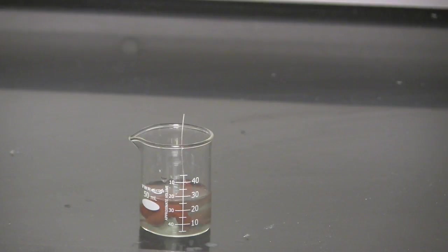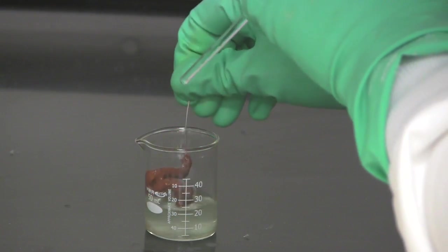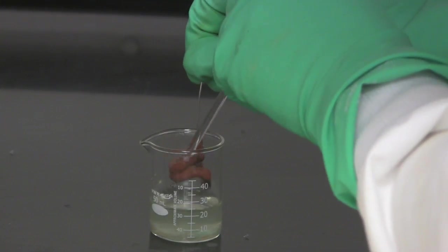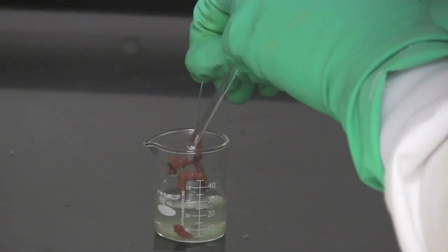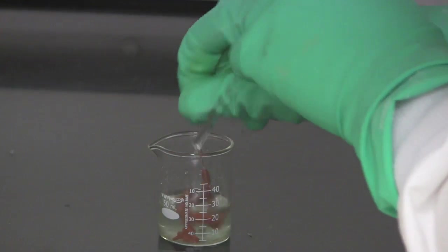Now, what I want to show you here is how easily the copper comes off the aluminum wire. You can see I'm just using a stirring rod here, a glass stirring rod. And you can see how it just sort of flakes off the wire.